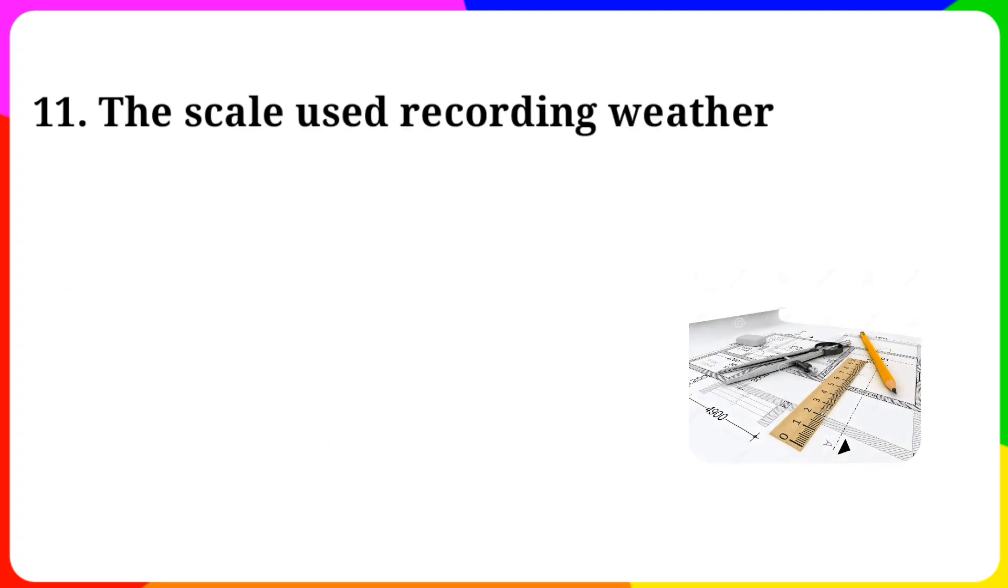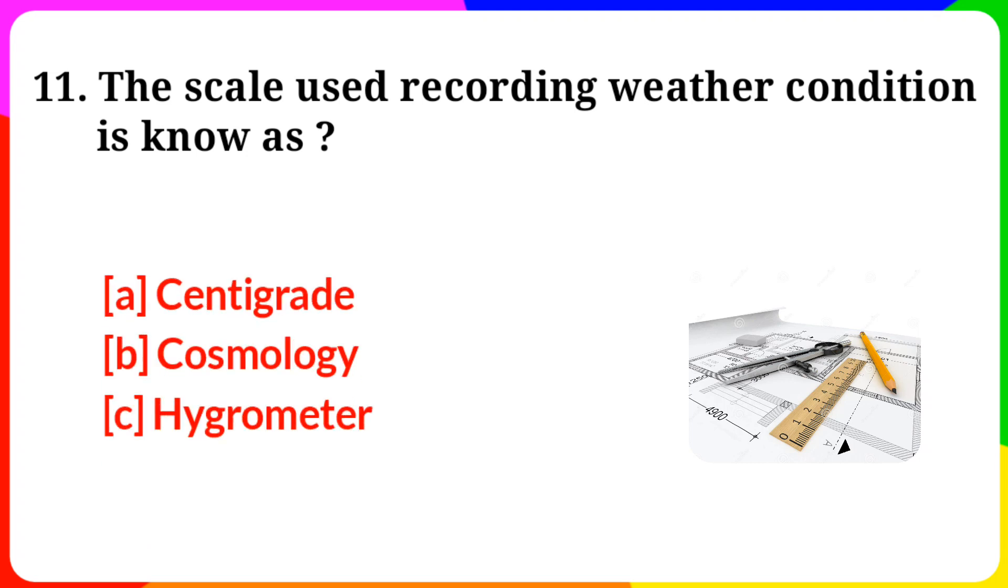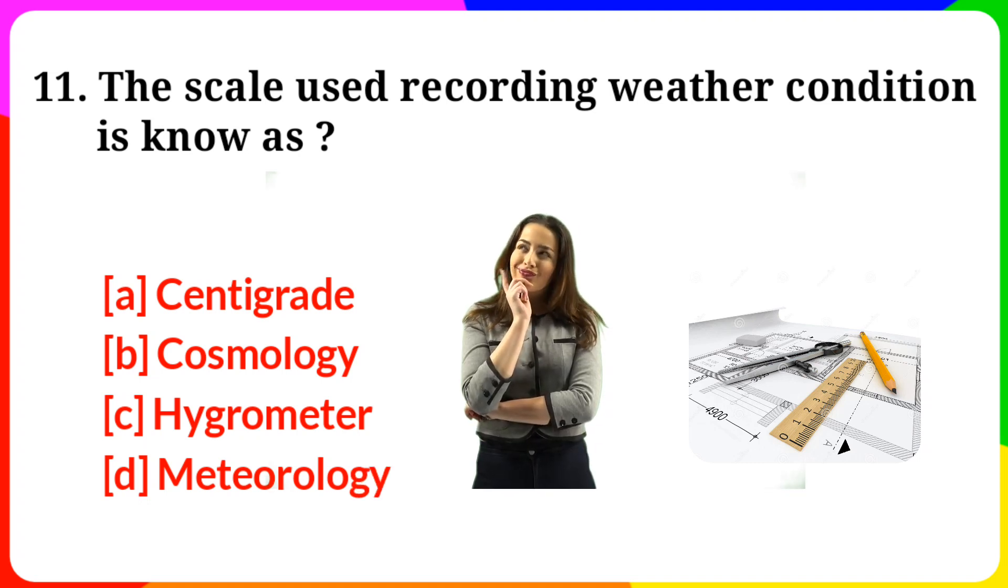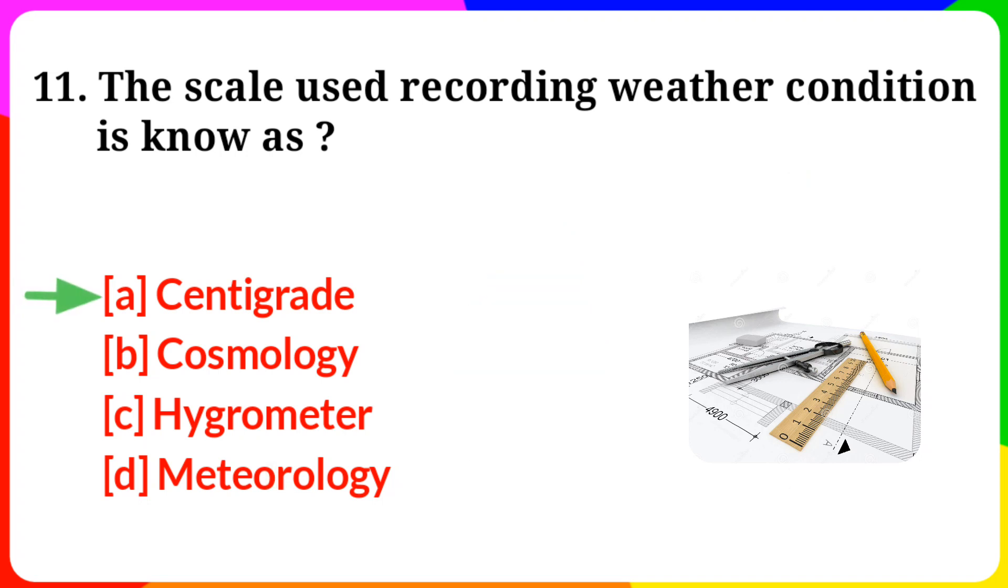Question number 11. The scale used for recording weather condition is known as? Option A: Centigrade. B: Cosmology. C: Hygrometer. D: Meteorology. Answer is option A, Centigrade.